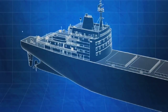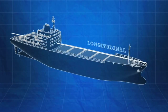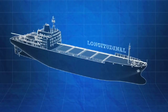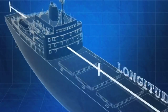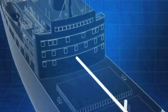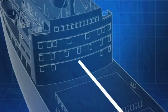Longitudinal is the horizontal direction along the length of a ship. Longitudinal distances are measured from one of three places: the forward perpendicular, the aft perpendicular, or midships. Where longitudinal measurements are taken from will vary from ship to ship.